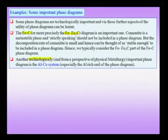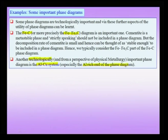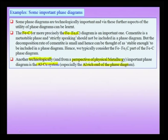We will consider the iron-rich side of the iron-carbon phase diagram, which is technologically very important. Another technologically important phase diagram is the aluminum-copper system, which we shall consider in the next chapter on phase transformations — particularly the aluminum-rich end. The aluminum-copper system is not only technologically important but rich from a physical metallurgy perspective, especially within 4 percent copper content.